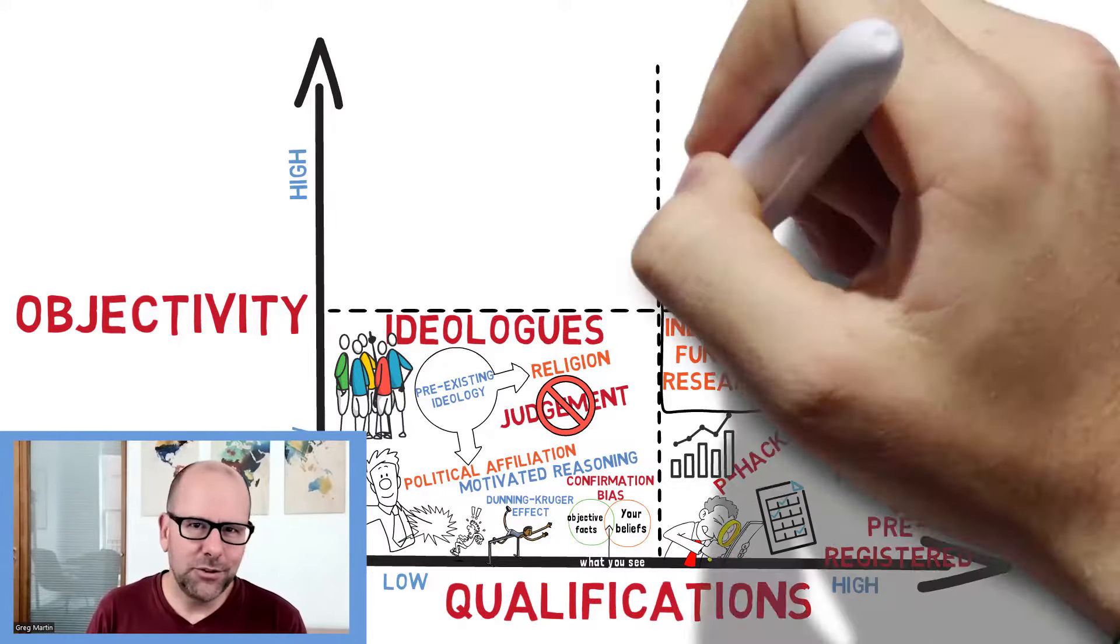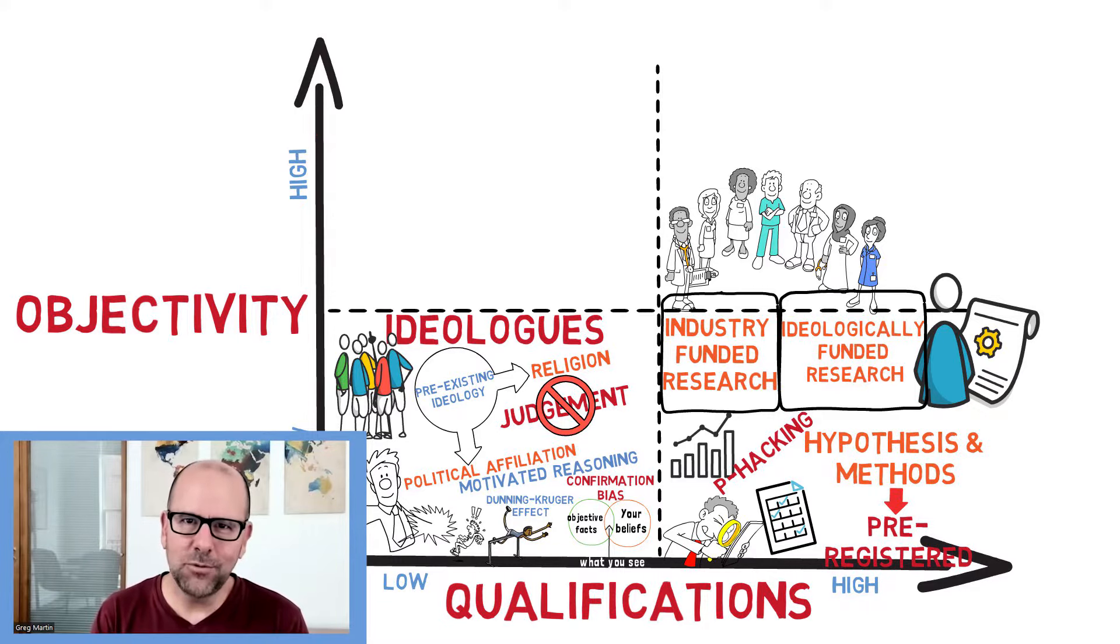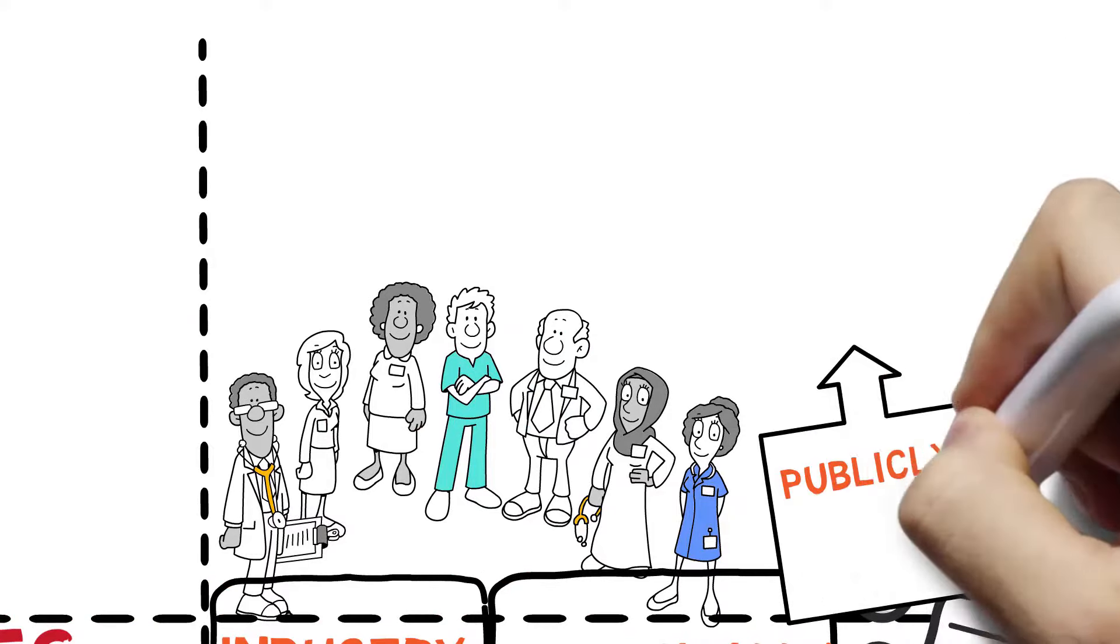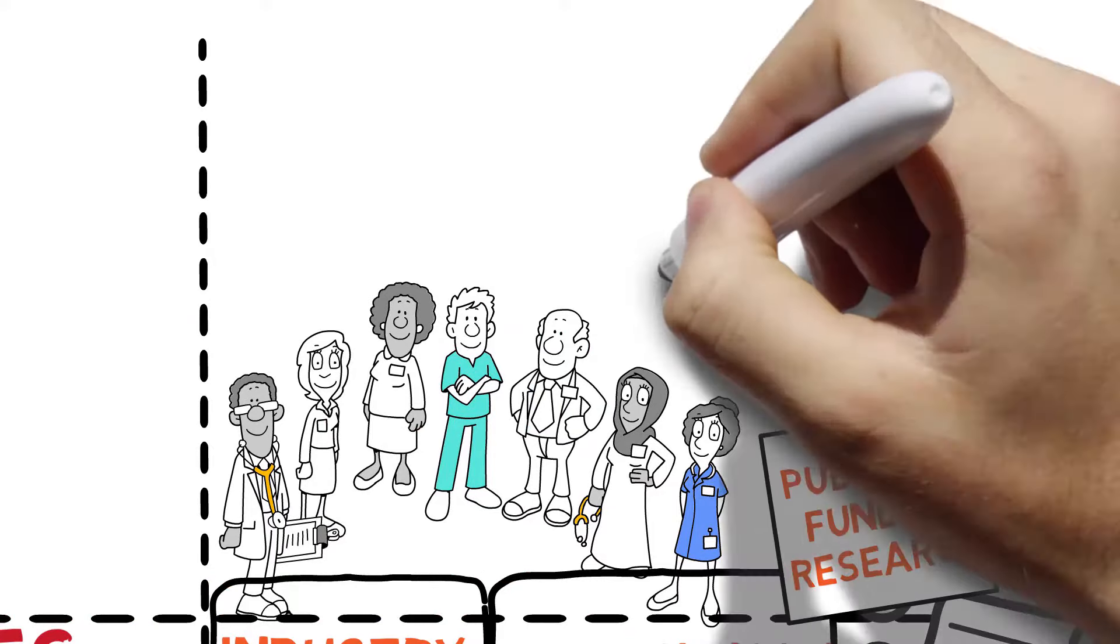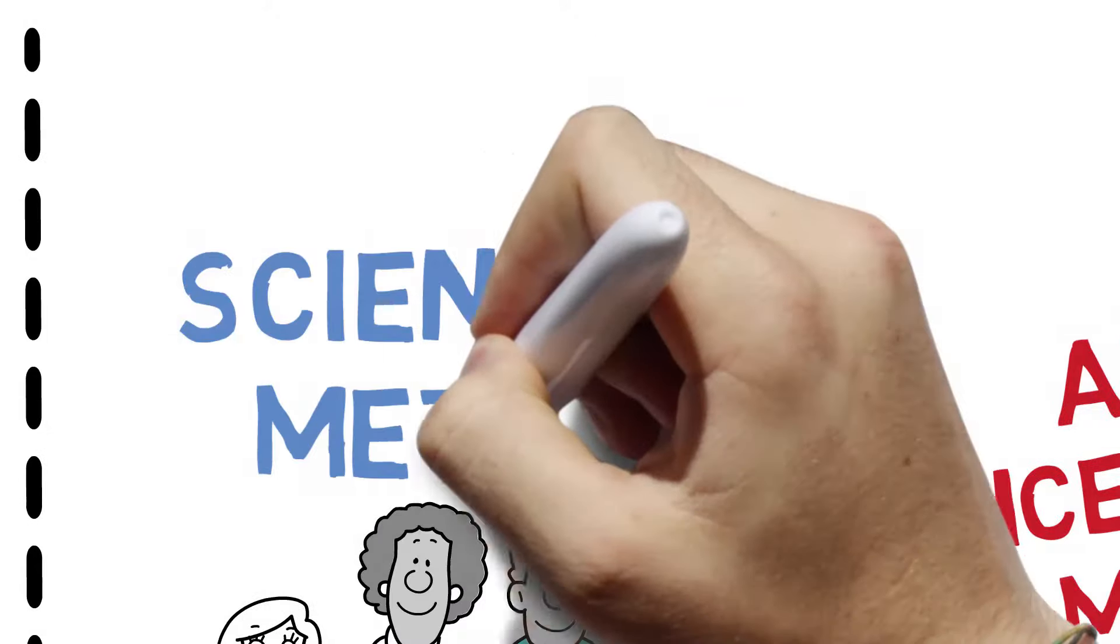So let's talk about the top right-hand quadrant. Here we've got people or institutions or voices that have got high levels of expertise and knowledge and experience. They also are objective and that's extremely important here. A good example of this is publicly funded research at a university. Scientists aren't incentivized or motivated to have results that go one way or the next. Of course there are exceptions we have to be aware but for the most part these are people or institutions or studies that are fully engaged with what we call the scientific method.